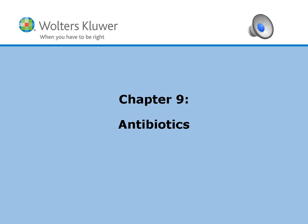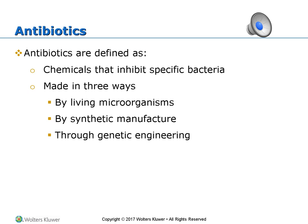Chapter 9: Antibiotics. This is a long chapter, but it's an important chapter. Antibiotics are defined as chemicals that inhibit specific bacteria. They can be made through living microorganisms, synthetic manufacturers, or through genetic engineering. New medications are continuously created due to resistance of existing drugs from the microorganisms.